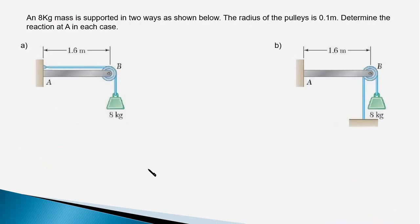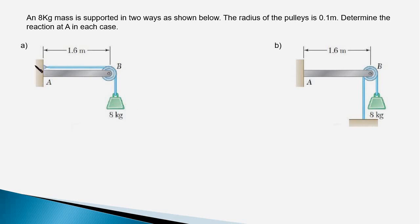Moving on to the second problem: we have a beam AB where end A is fixed to the wall and there is a small pulley at end B. An 8 kg mass is hung from the pulley via a cord. In one case the other end of the cord is connected to the wall, and in the second case it is connected to the ground. Despite the weight being the same in both cases, the loading pattern is slightly different, and we must determine whether the reaction forces at A remain the same or differ.